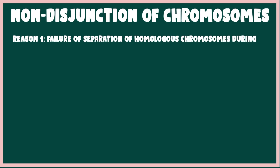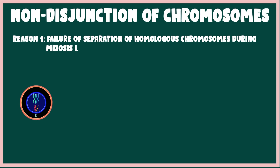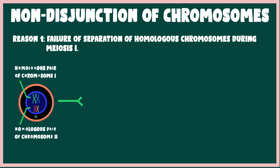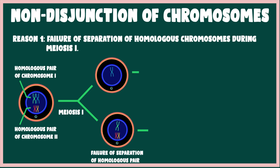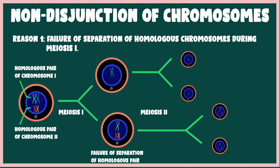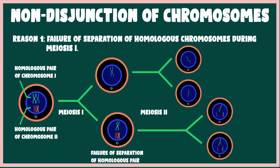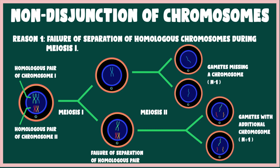The first reason is the failure of separation of homologous chromosomes during anaphase 1 of meiosis 1. As a result, out of 4 gametes formed, 2 gametes have a chromosome missing and are represented by n−1, while the other two gametes have an additional copy of a chromosome and are represented by n+1.